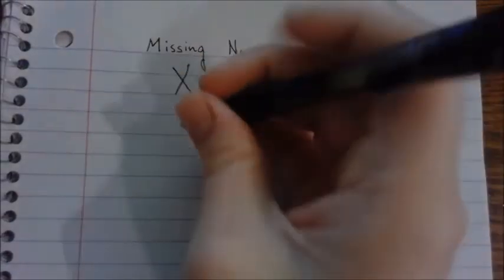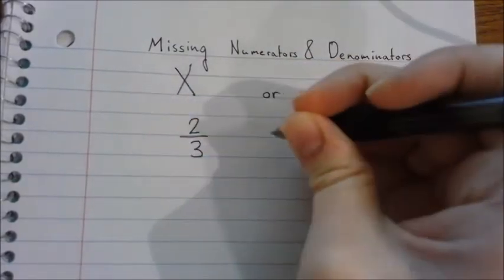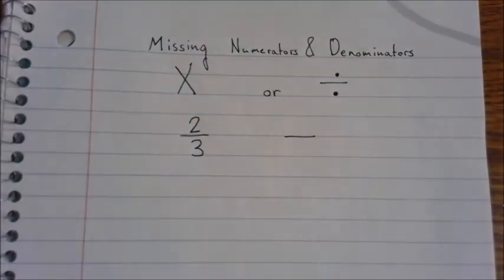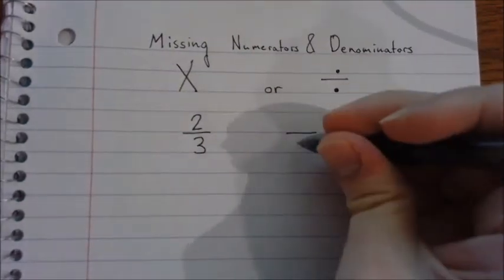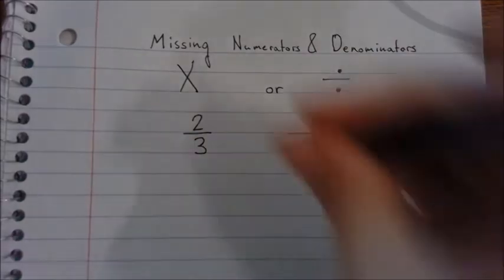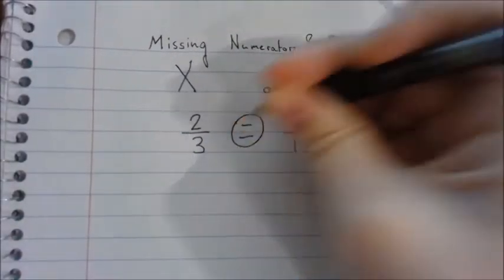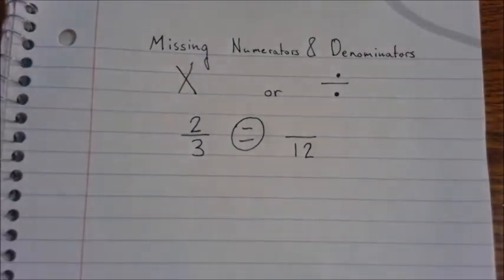Let me show you what I mean. So let's say we have two thirds and we need to find the missing numerator for a fraction that has 12 as the denominator. These need to be equivalent, so they need to be the same, but we are missing the numerator here.